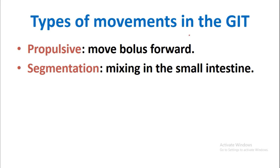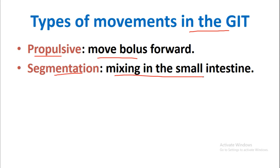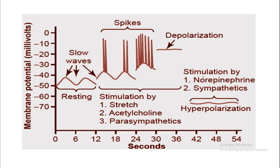There are two types of movements in the gastrointestinal tract. The first is propulsive movement, which moves the bolus forward — from the small intestine towards the large intestine and towards the anal canal. The second is segmentation movement, which involves mixing in the small intestine. So segmentation movement mixes the food, whereas propulsive movement moves the bolus forward.